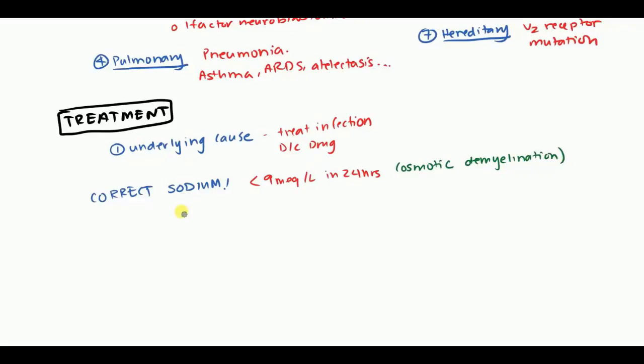So how would you correct the sodium? The way you'd correct it is by fluid restriction. If you can restrict the fluid to less than 800 milliliters per day, that's usually enough to start getting the serum sodium to increase. However, like I mentioned before, when you have patients with subarachnoid hemorrhage, you want to be more careful with fluid restriction.